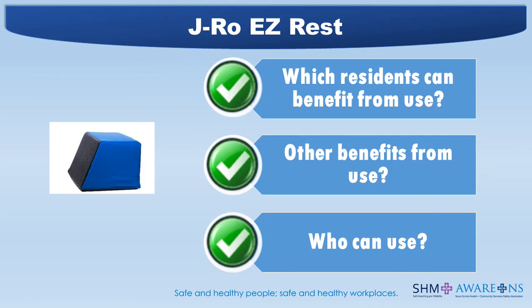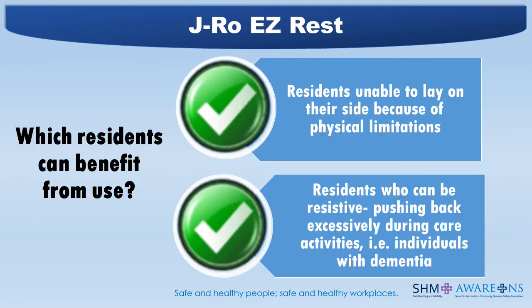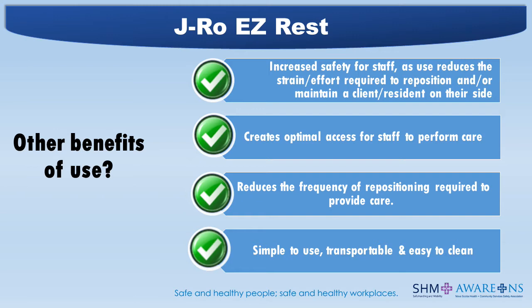The J-ROW Easy Rest benefits residents unable to lay on their side because of physical limitations secondary to conditions such as multiple sclerosis, Parkinson's disease, stroke, or obesity, among others, and residents who can be resistive or push back excessively during care activities, such as individuals with dementia. Other benefits include increased safety for staff as it reduces the strain and effort required to reposition or maintain a resident on their side, creates optimal access for staff to perform care, reduces the frequency of repositioning required, and is simple to use, transportable, and easy to clean. Using the J-ROW Easy Rest reduces the sustained extended arm posture to hold a client and is more comfortable for the client — for example, there are no fingers or nails in their back.